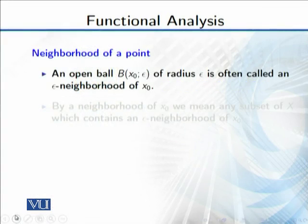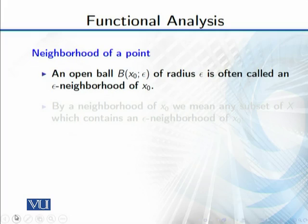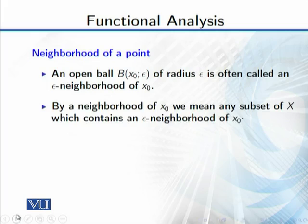First, neighborhood of a point is an open ball B(x₀, ε), where the center is at x₀ and radius is ε. This is often called an ε-neighborhood of x₀. By a neighborhood of x₀ we can mean any subset of X which contains an ε-neighborhood of x₀.